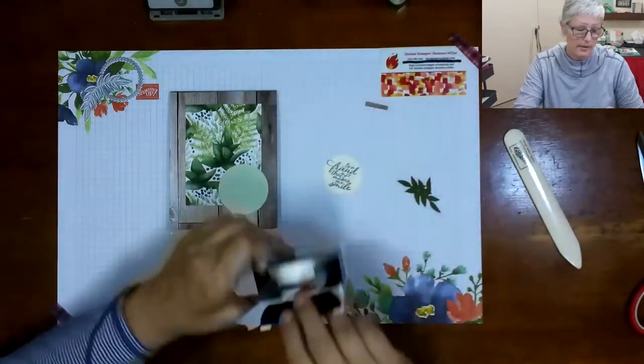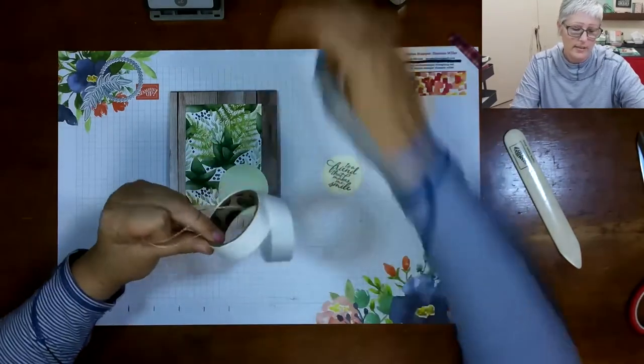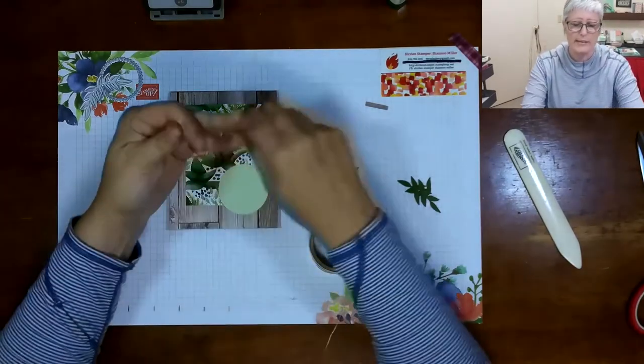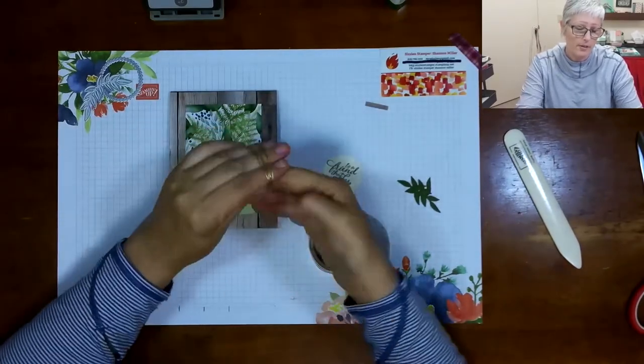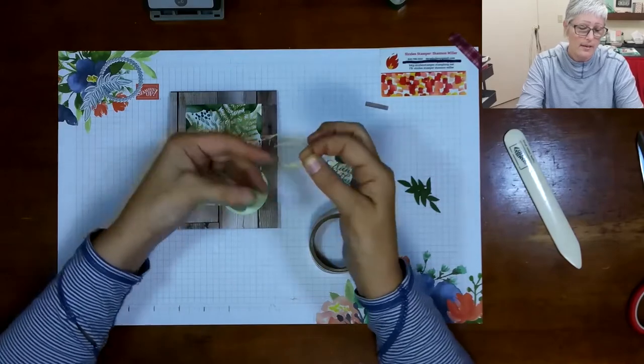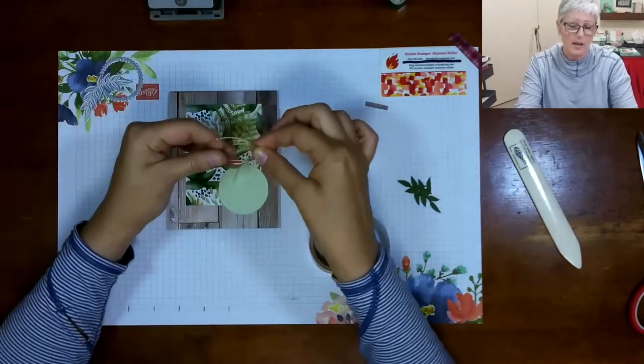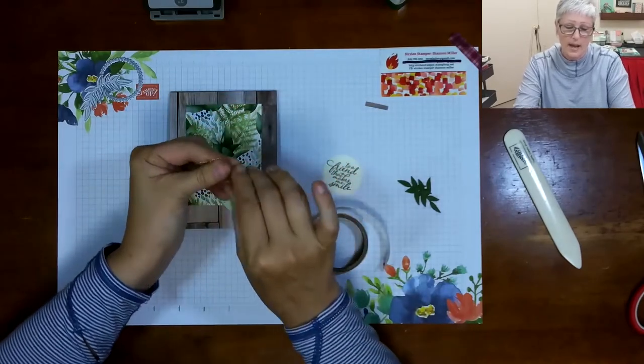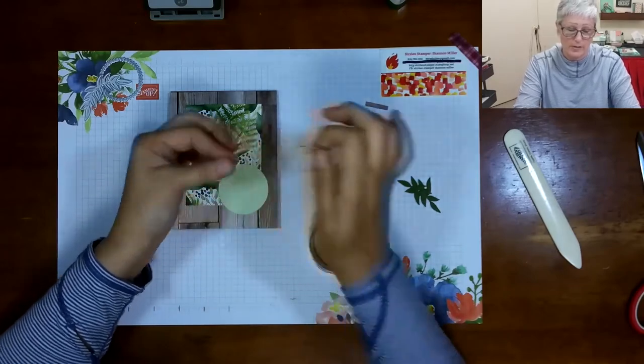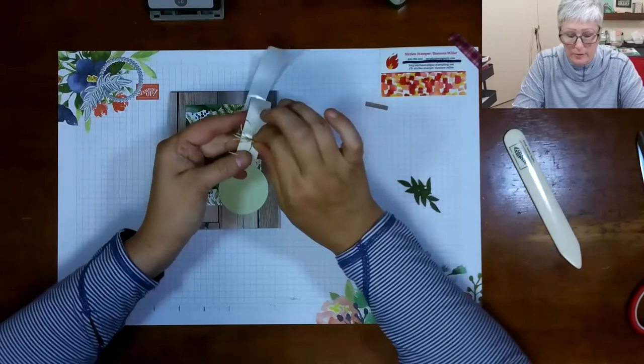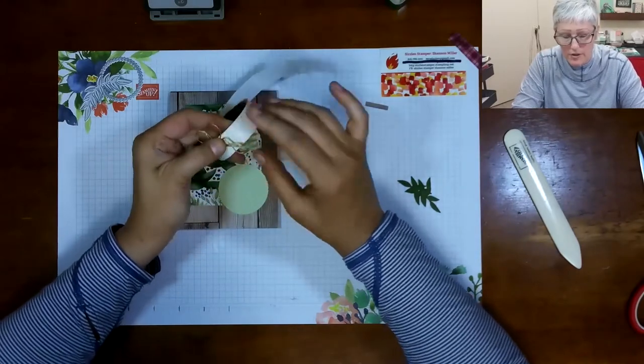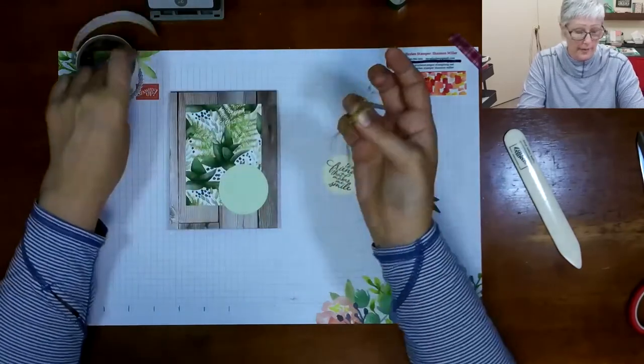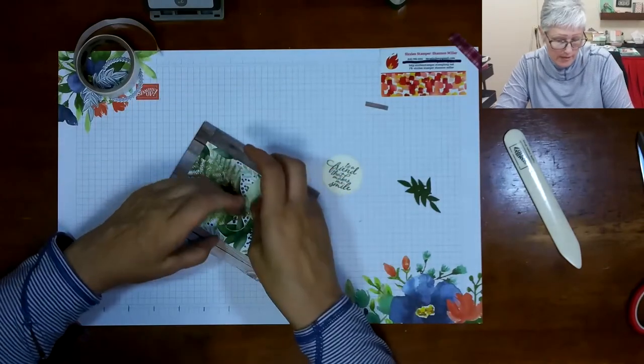A handy dandy tip I like to do with the twines to create these nice little sprays - I go around my fingers, I grab it, and I want to pinch it kind of in the center. It does not have to be perfect. I'm going to use my handy glue dots and I'm just going to lay where I pinched it right down on that glue dot.